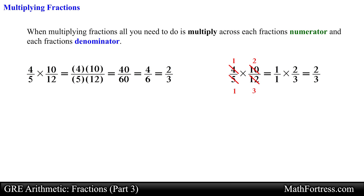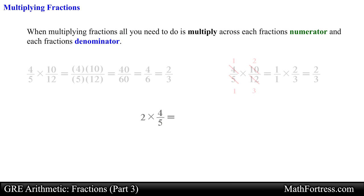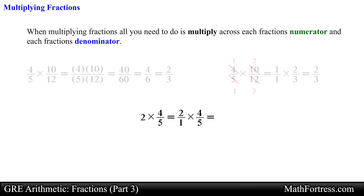The final type of multiplication problem you might encounter is multiplying an integer by a fraction. For example, say we want to multiply 2 times 4 fifths. Recall that we can write the integer 2 as a fraction by placing it over a denominator of 1, so we rewrite 2 as 2 over 1. Now we can multiply across, and carrying out the product we obtain the final answer equal to 8 fifths.